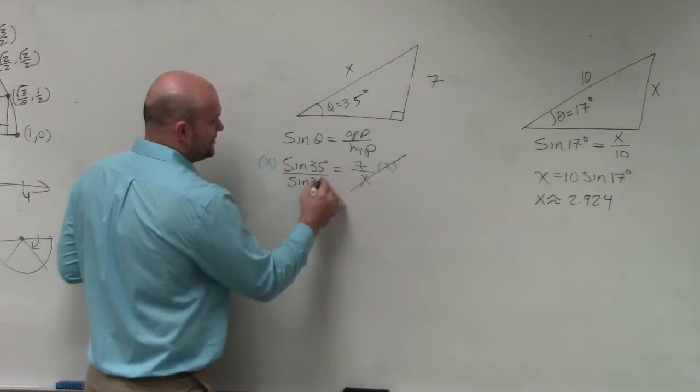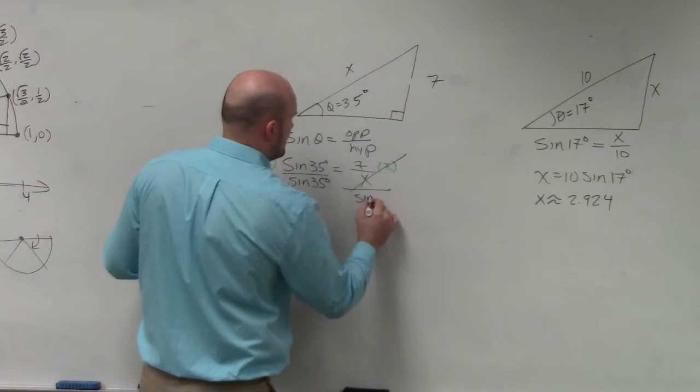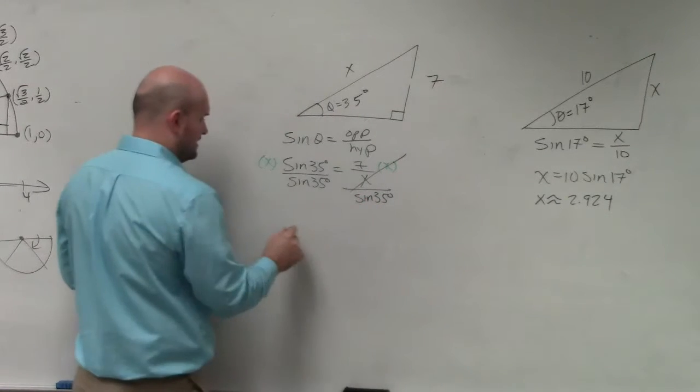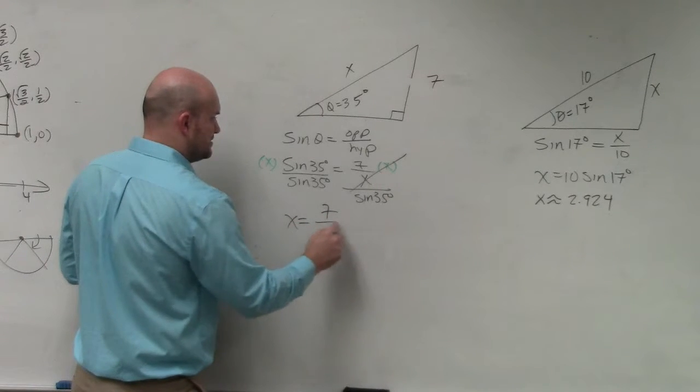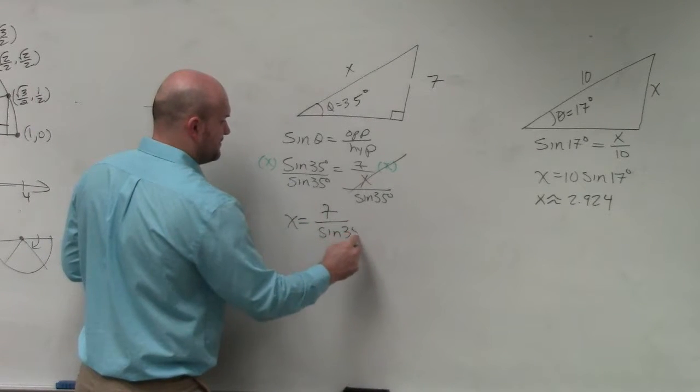So I'll divide by the sine of 35 degrees on both sides, and I get the equation x equals 7 divided by the sine of 35 degrees.